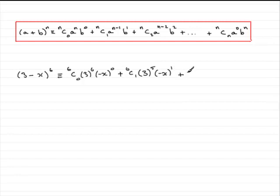Third term is going to be 6C2. Reduce the power of a, so we were at 3 to the power 5 a moment ago, so it's now 3 to the 4. And we increase the other term, the b term, by 1 power. So it's minus x to the power 2.